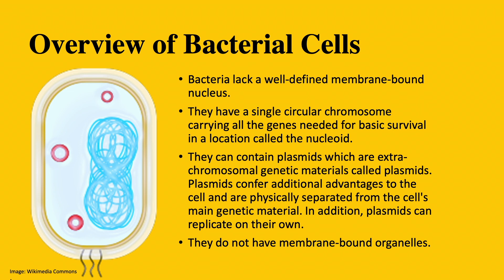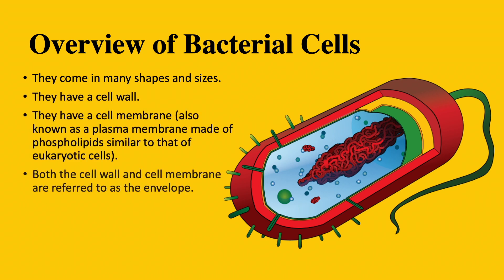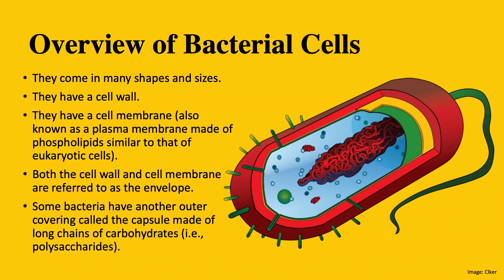Bacterial cells also don't have membrane-bound organelles. They come in many shapes and sizes. They have a cell wall and a cell membrane, also known as a plasma membrane, which is made of phospholipids, similar to that of eukaryotic cells. Both the cell wall and the cell membrane are referred to as the envelope. Some bacteria have another outer covering called a capsule, which is made of long chains of carbohydrates.